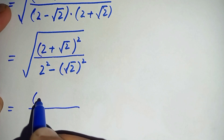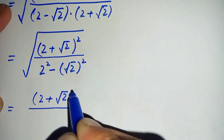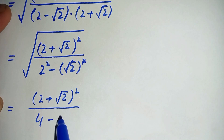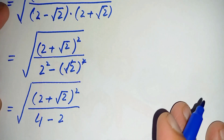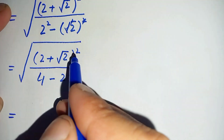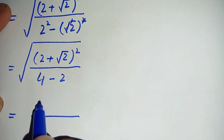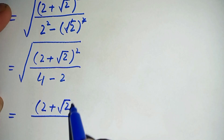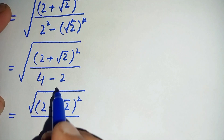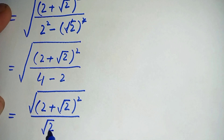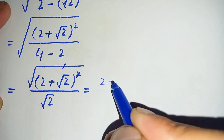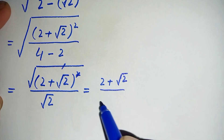The numerator stays as (2 plus square root of 2) squared. In the denominator, 2 squared is 4, and (square root of 2) squared is 2, so 4 minus 2 equals 2. We split the square root over numerator and denominator: the square and square root in the numerator cancel, leaving 2 plus square root of 2, divided by square root of 2.